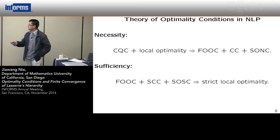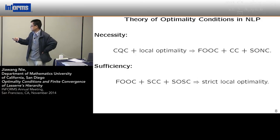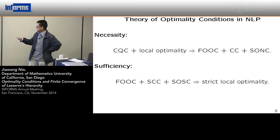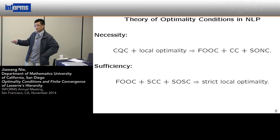Let me summarize quickly. Suppose u is a local minimizer. Then under the constraint qualification, if a point is a local minimizer, three conditions hold: the first order KKT condition, complementarity, and the second order necessary condition. For sufficiency — a stronger version — we assume the KKT condition and the second order sufficient condition. If these three conditions are satisfied, then we can prove that a point must be a strict local minimizer.